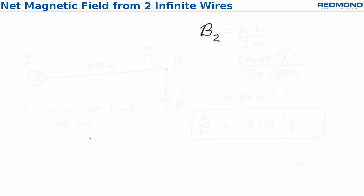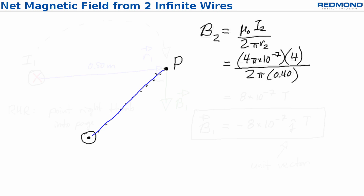Next, consider B2. B2 is equal to mu-naught I2 over 2 pi R2, where mu-naught is again 4 pi times 10 to the negative 7, I2 is 4 amps, and R2 is 0.40 meters. This simplifies to 20 times 10 to the negative 7 tesla.